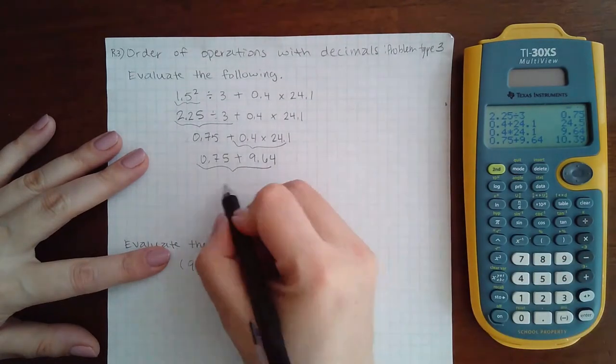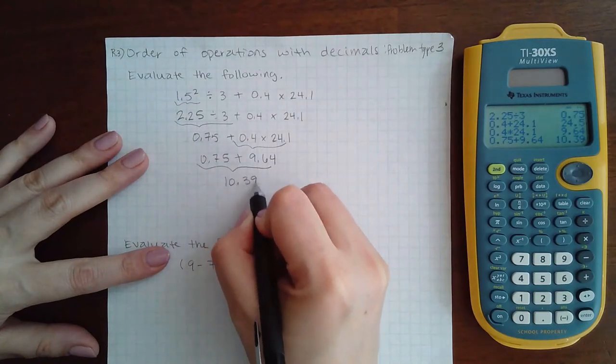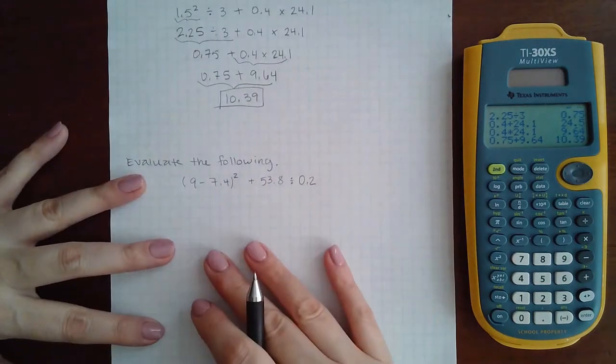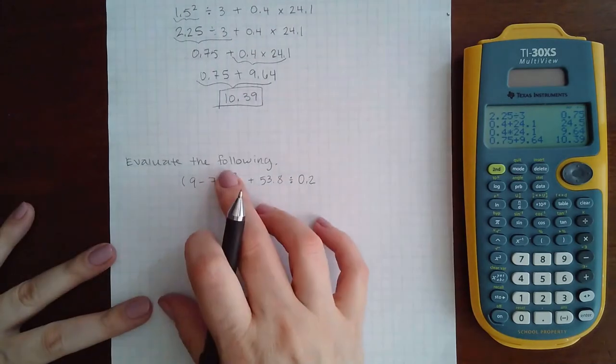And I get 10.39 as the final answer. Now in this example we do have a group, we have parentheses that represents a group.